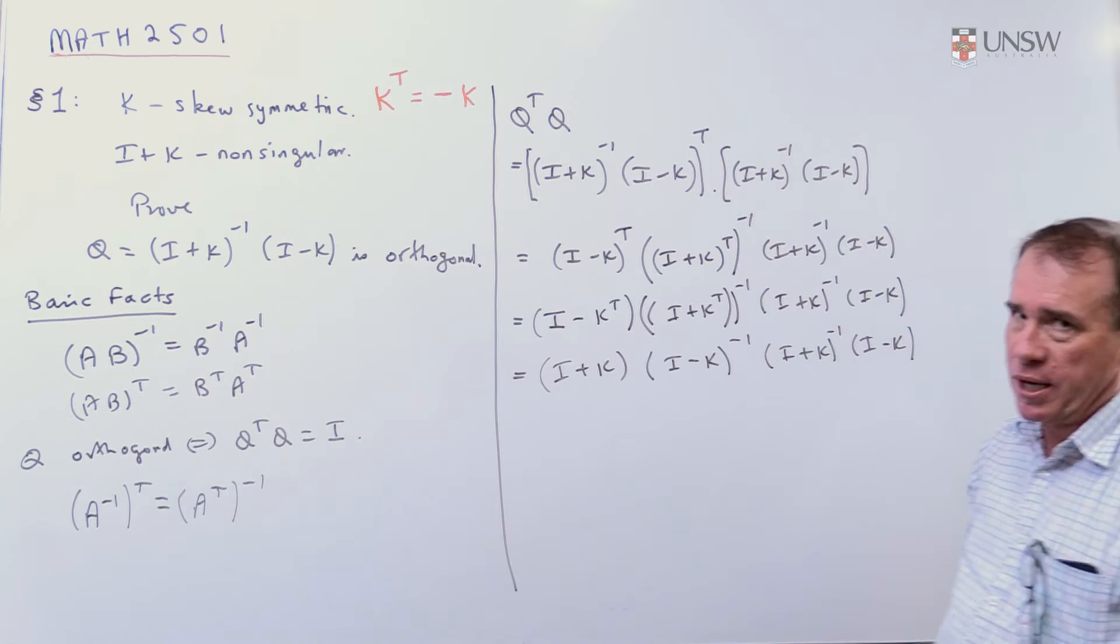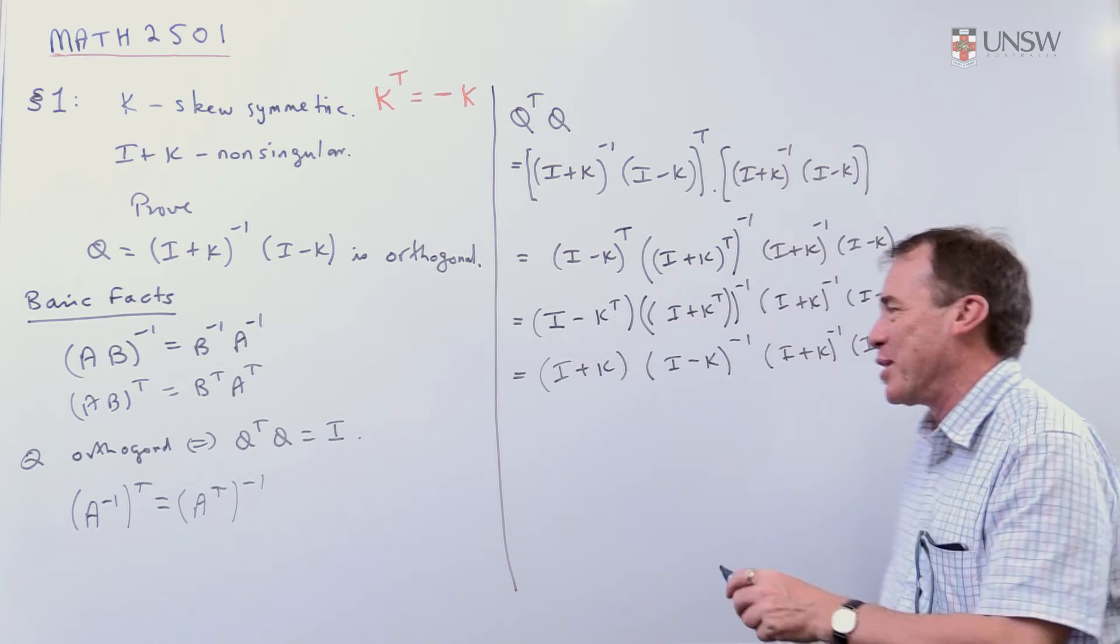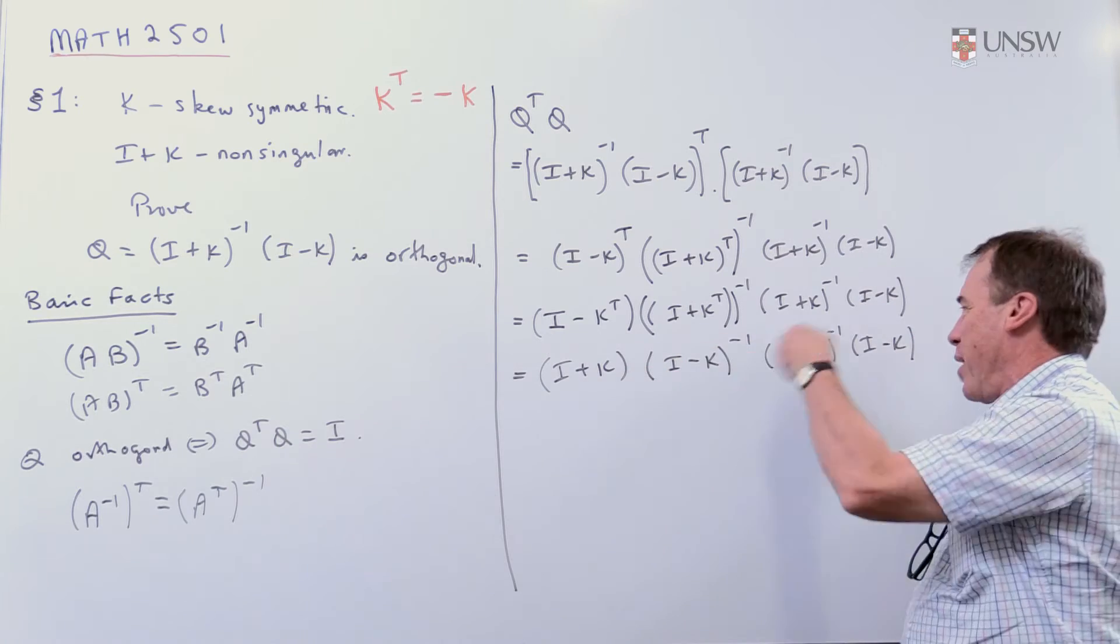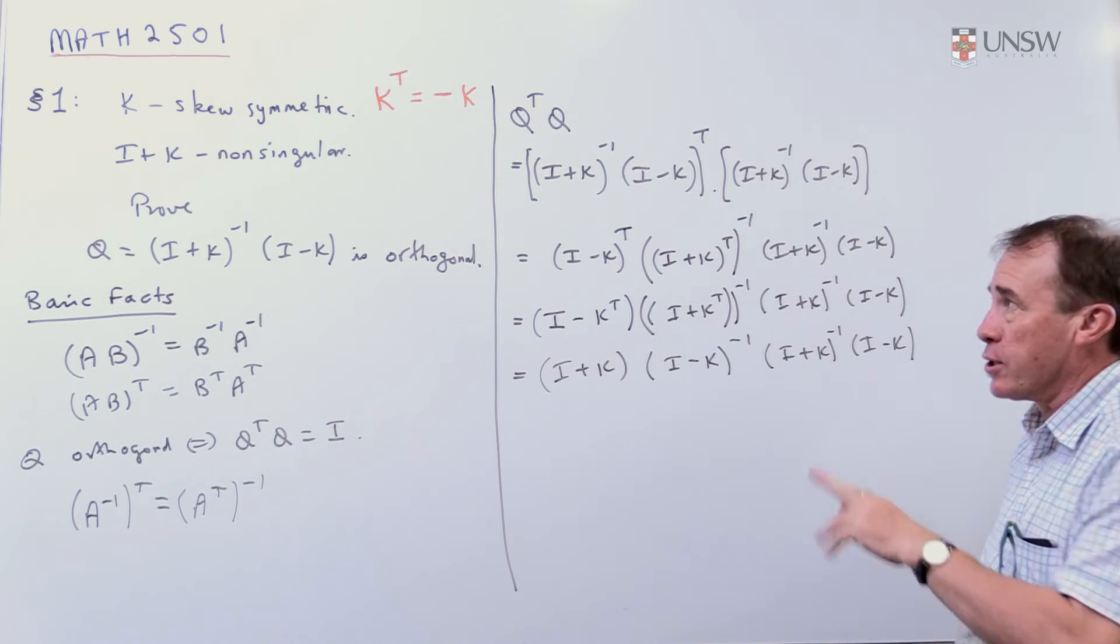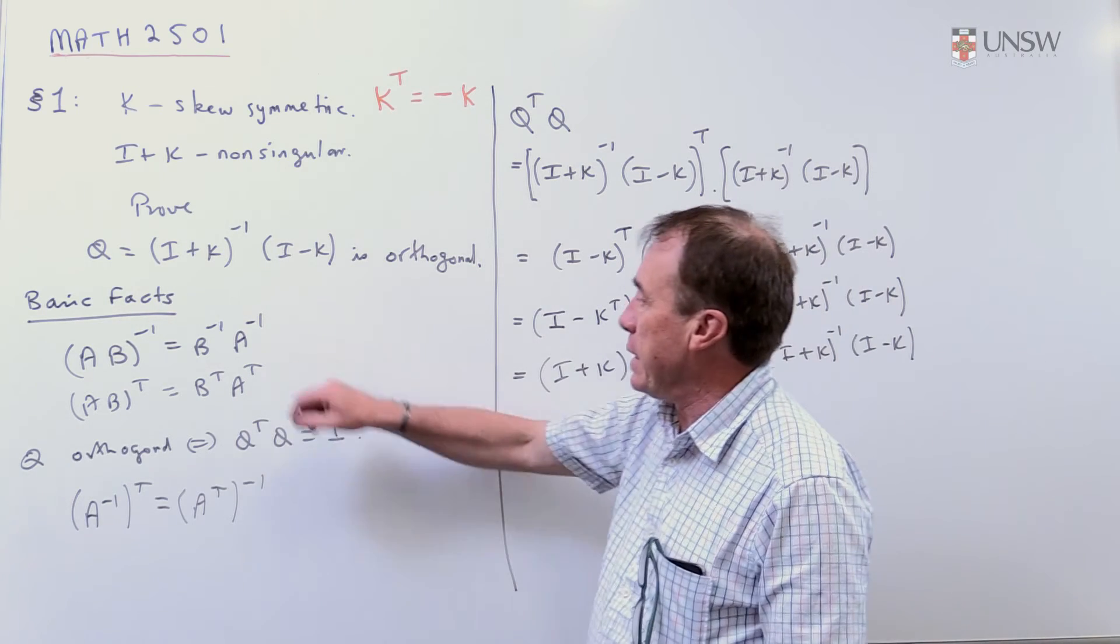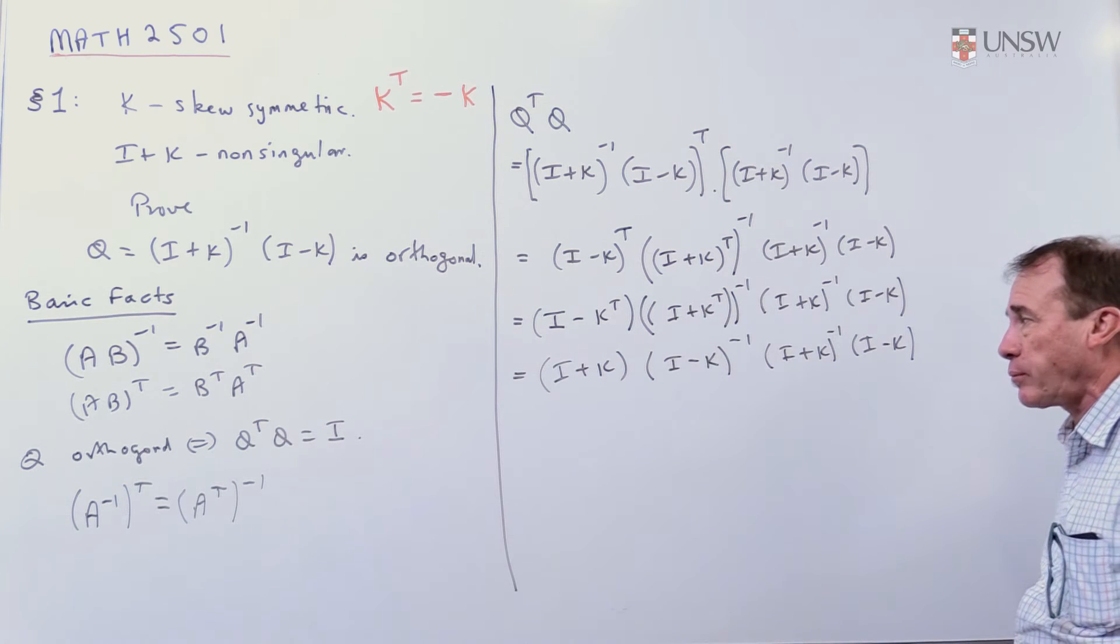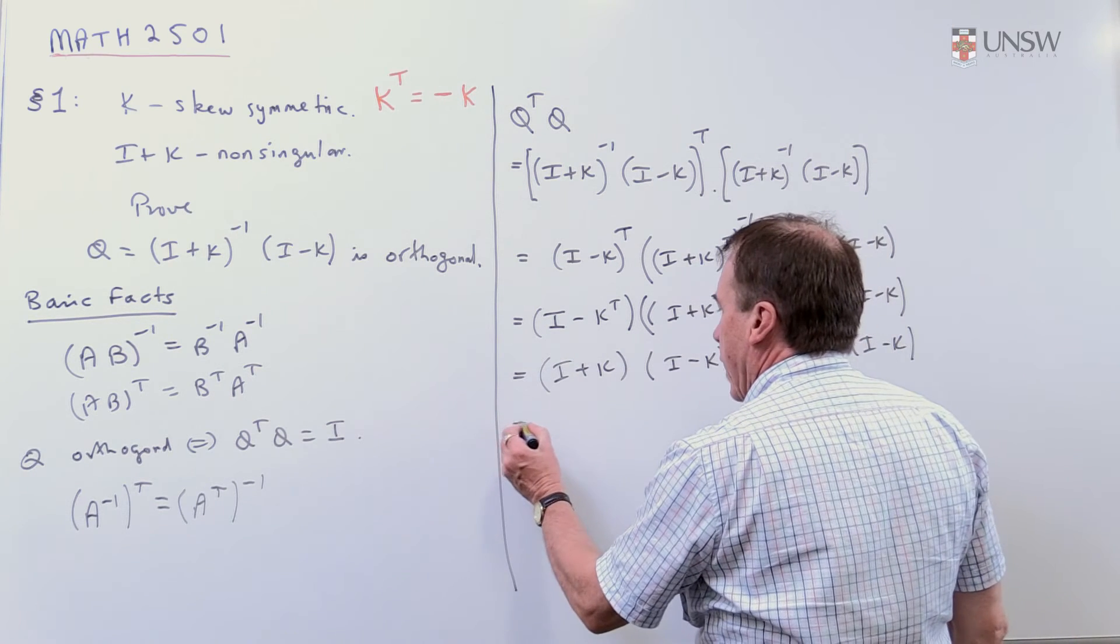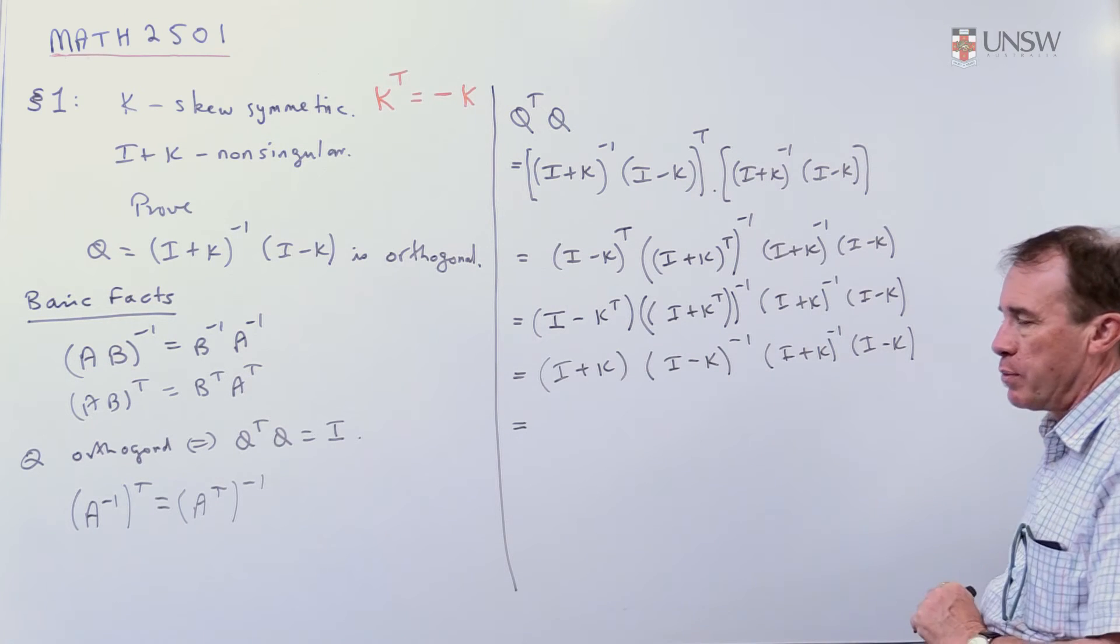Now, the temptation at this stage, a temptation you should strongly resist, is to cancel out this one with that one and that one with that one and say, there, I finished, because that's not correct. It certainly will happen that this product is going to be the identity matrix, but not because, not for that reason. So, I need to be very careful here. That's a trap you could easily fall into at this particular point.